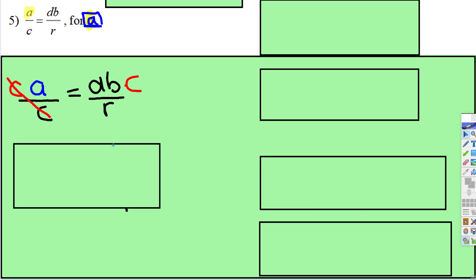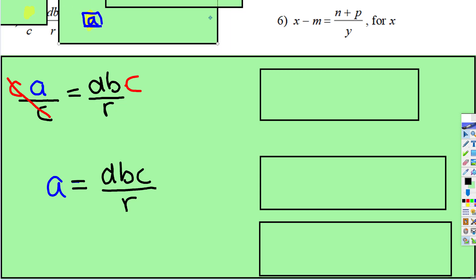And when we do that, tada, a is equal to dbc all divided by r. So that was a pretty easy one. Let's look at the next one.